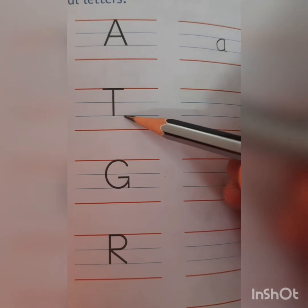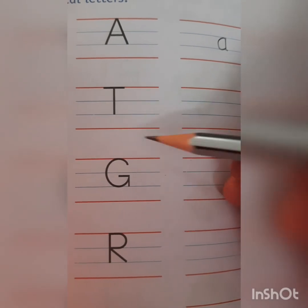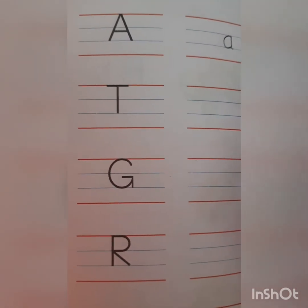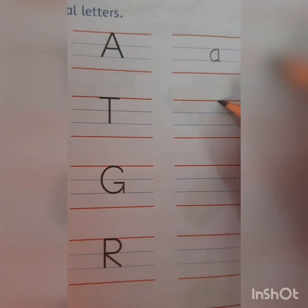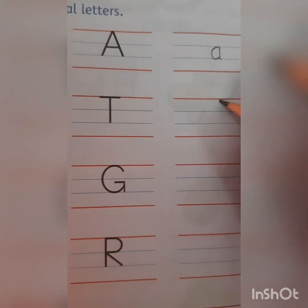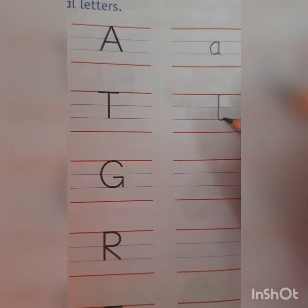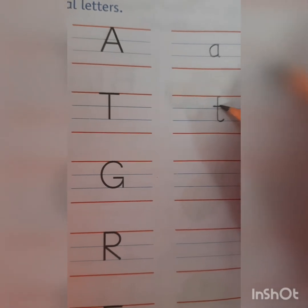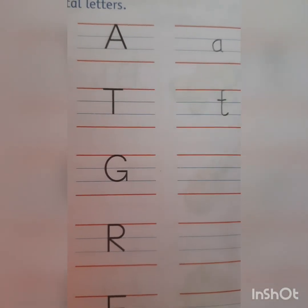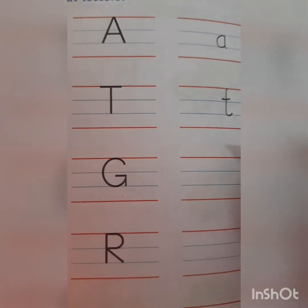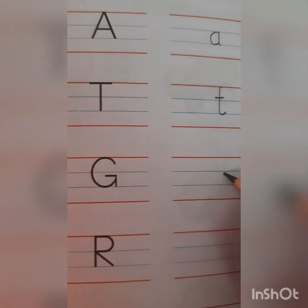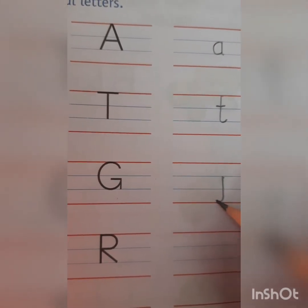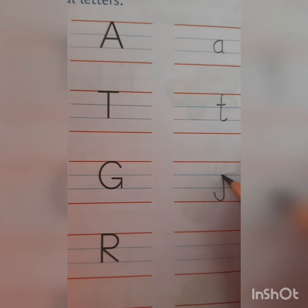This is mama letter T. What is the phonic sound of letter T? It's T. And we have to make small t here. So this is small t. This is capital G. We have to make small g. And phonic sound of letter G is ga.